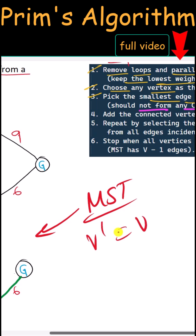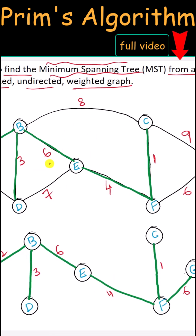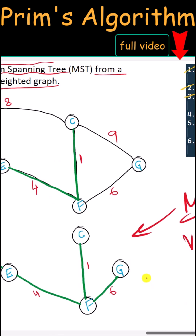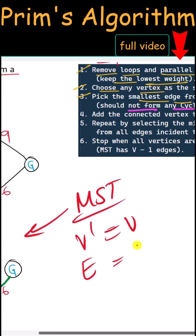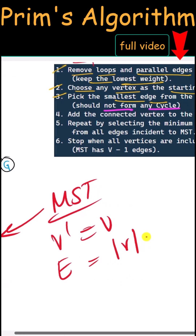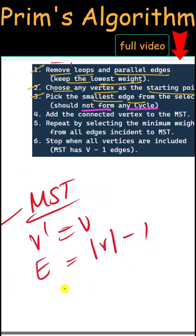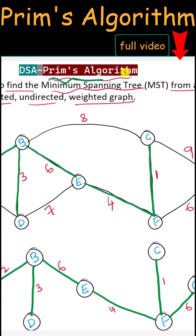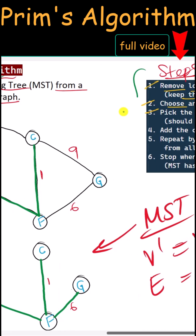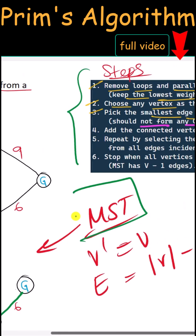The resulting MST contains all the vertices from the graph, and the number of edges equals the number of vertices minus one. This is how we use Prim's algorithm to find the minimum spanning tree.